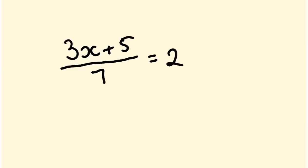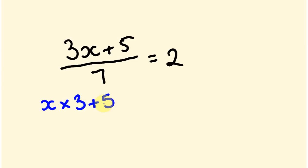I'm going to show you a first step — one that you probably won't need to do after a while, as you'll do it in your head. It's really important to realize what's going on. Starting with x, I'm going to think about this in terms of BODMAS. I'll write what we're doing to x from left to right in order: first we times x by 3, then we add 5, and then we divide the whole amount by 7, getting an answer of 2.